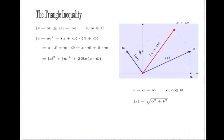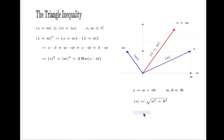We know that the absolute value of z is the Pythagorean expression — the square root of the sum of squares. The sum of squares is bigger than each square individually. If I formalize this, the absolute value of the real part a is less than or equal to the absolute value of z. The real part of a complex number is always less than or equal to the length of that complex number — and the same goes for the imaginary part.